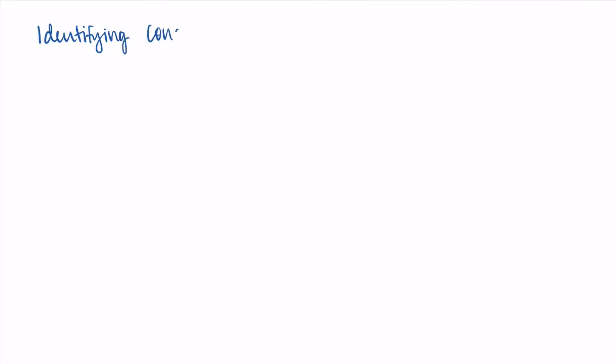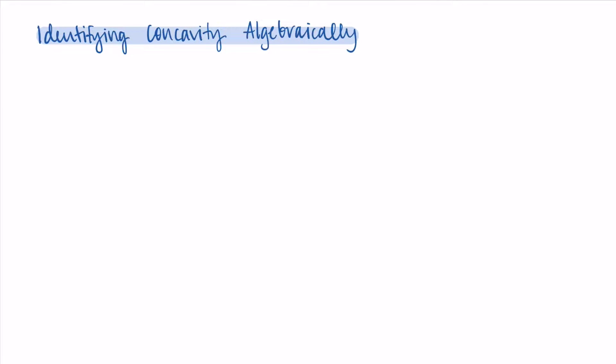Welcome back. In this video we are continuing our discussion of the second derivative and concavity — where a function is concave up and concave down — and we're going to talk about how to identify concavity algebraically. This means how we determine where a function is concave up and concave down precisely using calculus. Let's jump right in with an example.